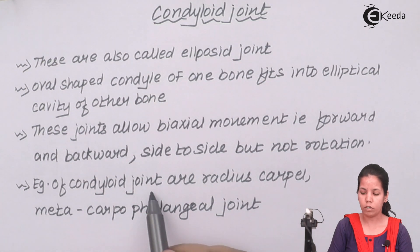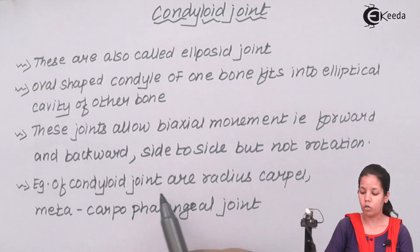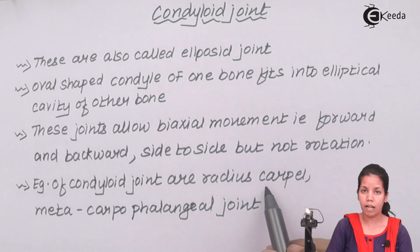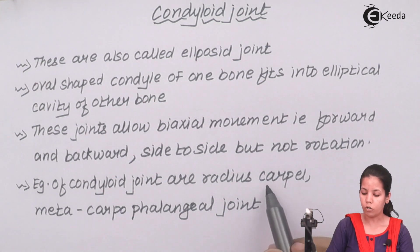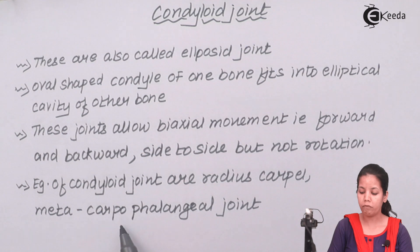Examples of condyloid joints would be your radius-carpal joints and your metacarpophalangeal joints.